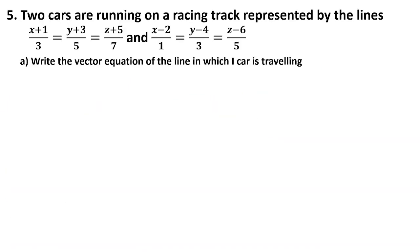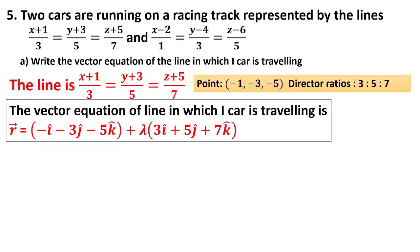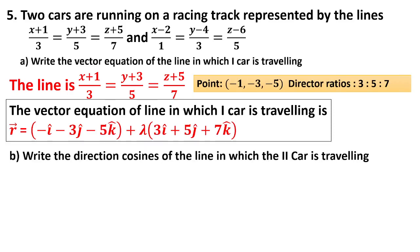Question number 5: Two cars are running on a racing track represented by two lines. Write the vector equation of the line in which the first car is traveling. Take the equation in proper form. This is the vector equation, very simple if you know the point and direction ratio vector.